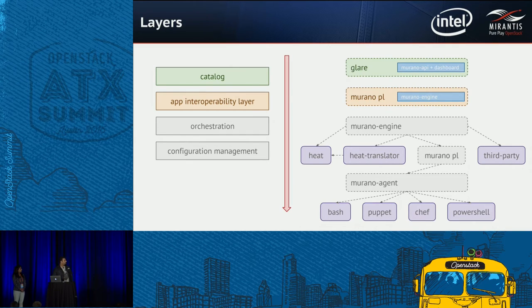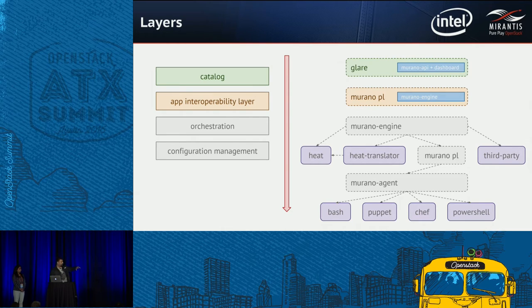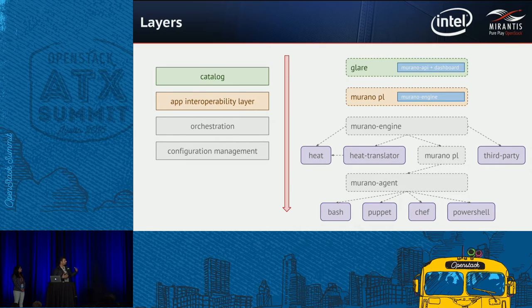So this is the whole stack of Murano. Once again, the first two layers — catalog and application interoperability — are the most important and unique parts. The other two layers are used when something is missing in other engines, or when you already have existing pieces and just want to run quickly without converting existing scripts or applications.